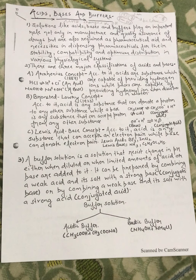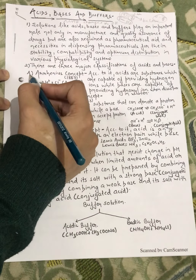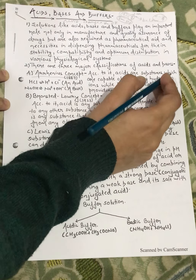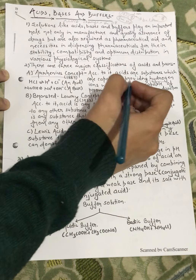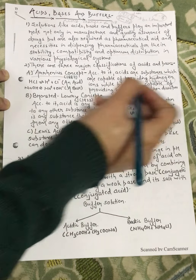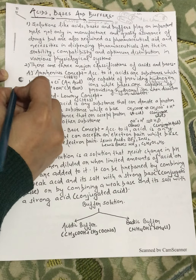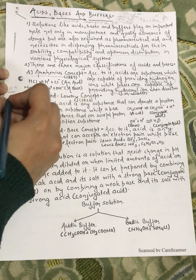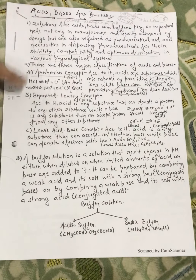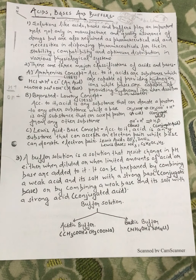These are the three major classifications of acids and bases. First is the Arrhenius concept. According to it, acids are substances capable of providing hydrogen ions, while bases are capable of providing hydroxyl ions — that is, OH negative ions. This is our Arrhenius concept.